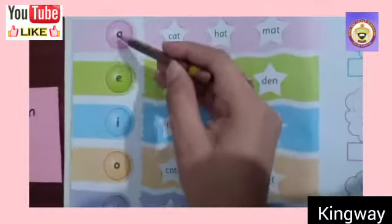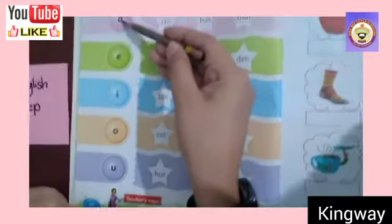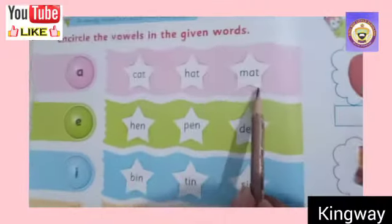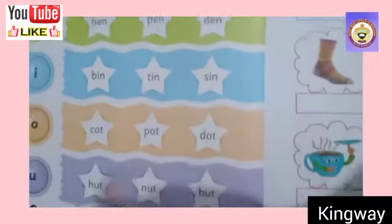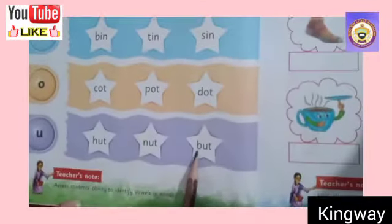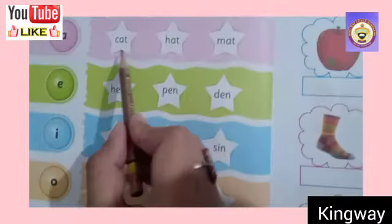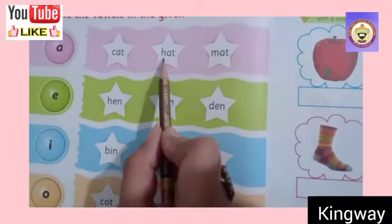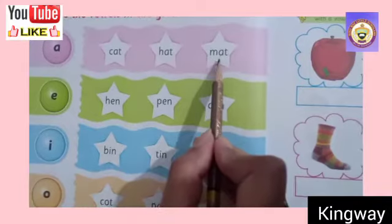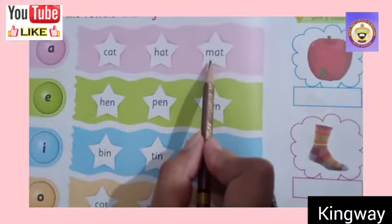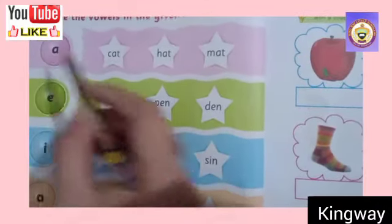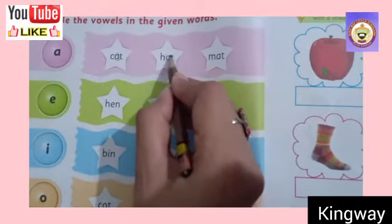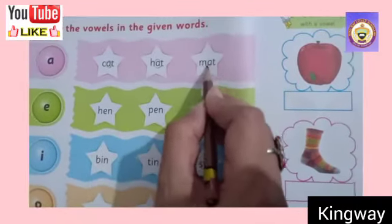These are vowels: A, E, I, O, U. In the assessment, three-letter words are given. Three-letter words means three letters — for example: cat, hat, mat. You have to see that vowel A is used — it is definitely in the middle. So we will circle it in the middle. Okay dear students.